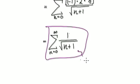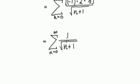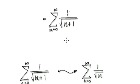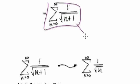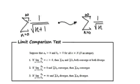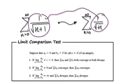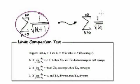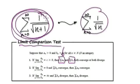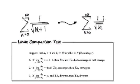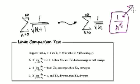Now it boils down to determining if this series converges or diverges. This is not an alternating series — it's always positive — so we can't use the alternating series test. We are going to use the limit comparison test. As n tends to infinity, this term acts like 1 over root n. We compare these two. We know that 1 over n^(1/2) is going to diverge — we've seen this many times — it's a p-series with p = 1/2.